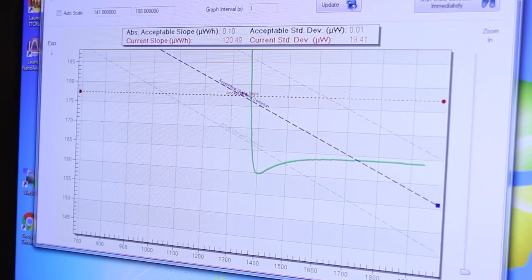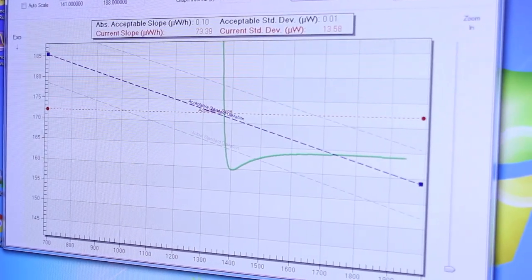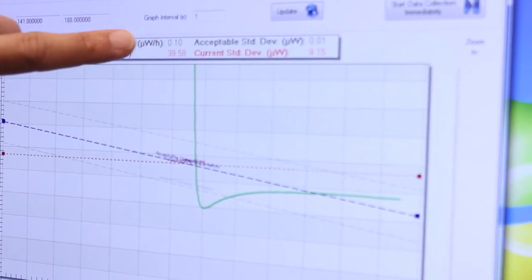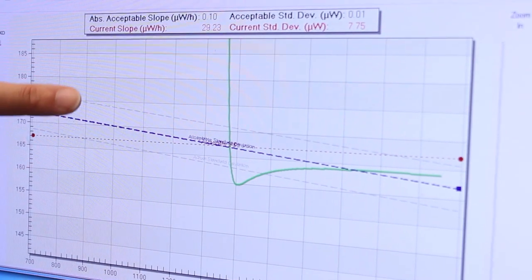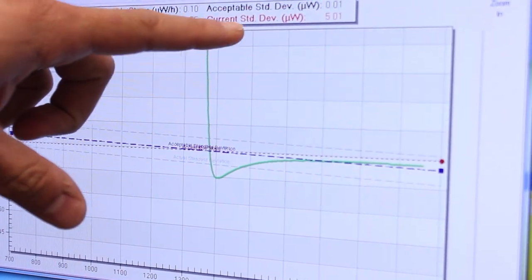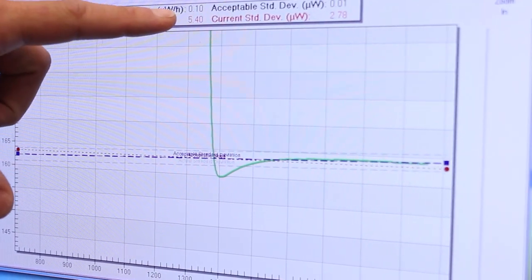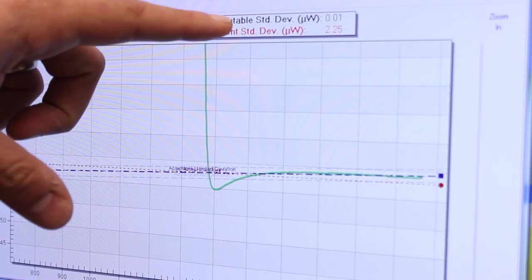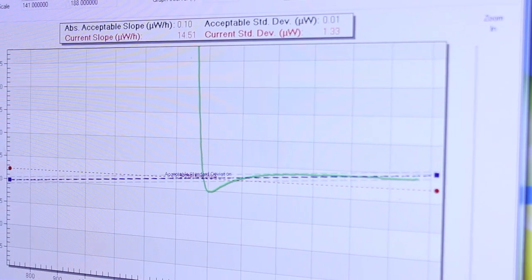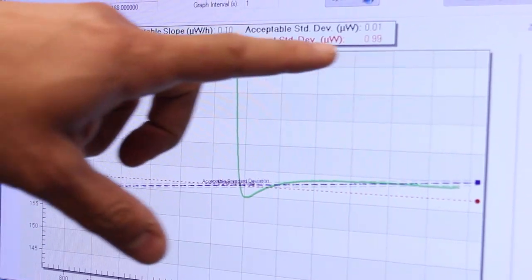Okay now it has collected enough statistics that the auto equilibration procedure has actually started. What you see on here either printed on the top of the graph or shown graphically on the graph itself are the current slope of the baseline and the current standard deviation of the baseline as well as the acceptable slope based on the amount of heat that you expect and the acceptable standard deviation again based on the amount of heat that you expect. We can currently see that the current slope is much much larger than the acceptable slope.